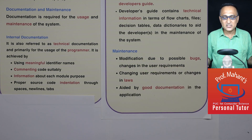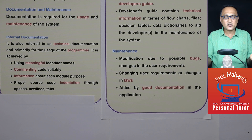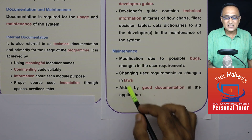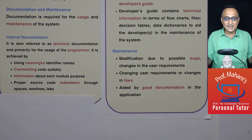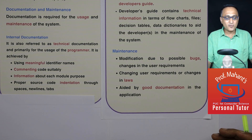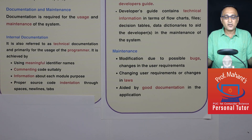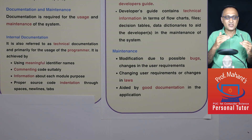For example, in the CoWIN application, if you are currently using it for 18-plus users and decide to extend it to 12-to-18, you need to make changes so new users can use it. New vaccines may also come, requiring further changes. Maintenance is always easier when you have excellent internal and external documentation. Poor documentation will make maintenance a nightmare — if you do not write meaningful names, proper comments, or indent your code properly, it makes it very hard. I hope this clarifies the last phase: the importance of documentation and maintenance.